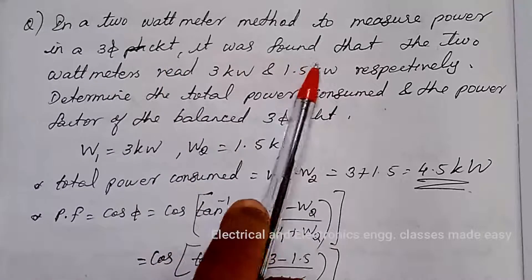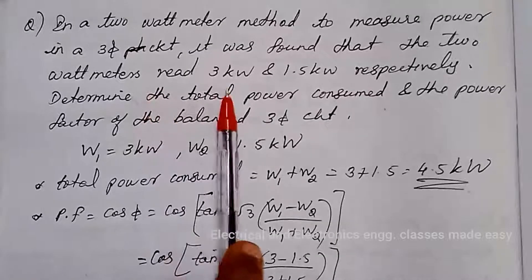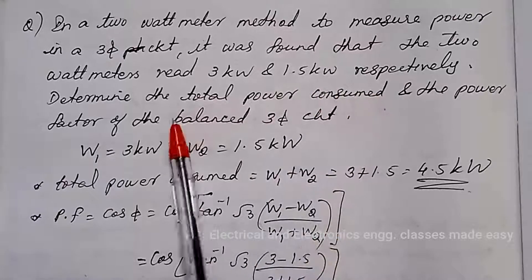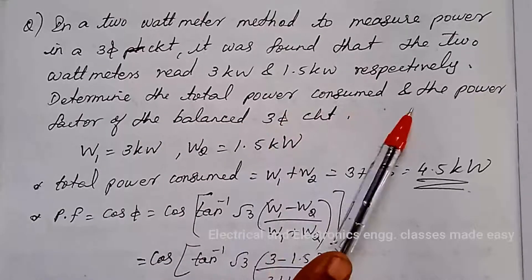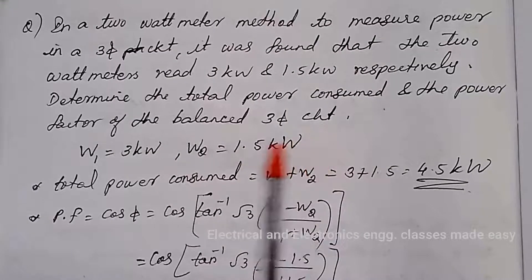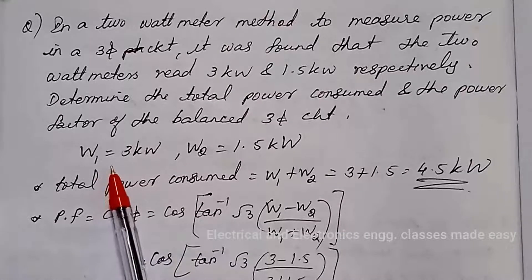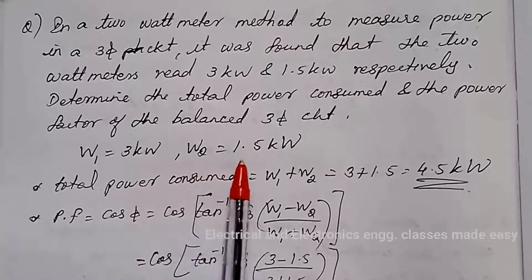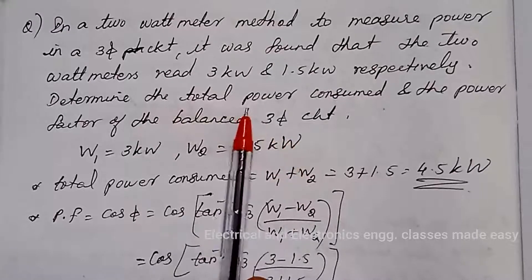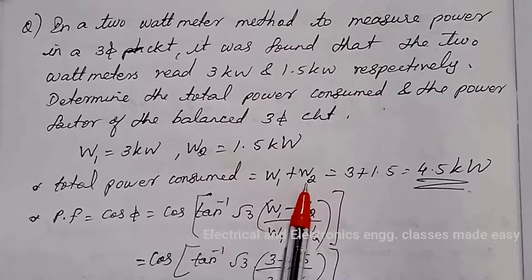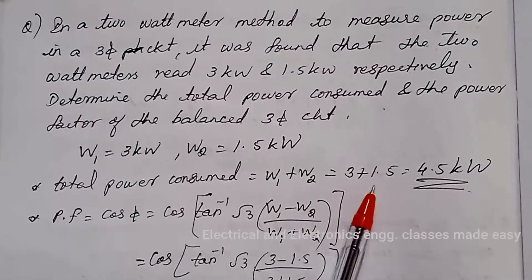In a 2 watt meter method to measure power in a three-phase circuit, it was found that the 2 watt meters read 3 kilowatt and 1.5 kilowatt respectively. Determine the total power consumed and the power factor of the balanced three-phase circuit. The watt meter readings are W1 = 3 kW and W2 = 1.5 kW, so the total power consumed is W1 + W2 = 3 + 1.5 = 4.5 kilowatt.